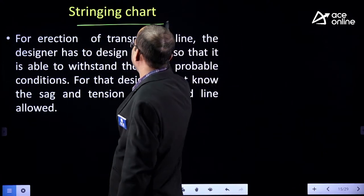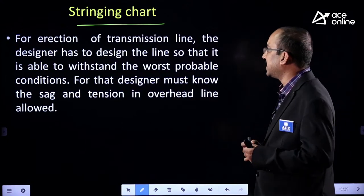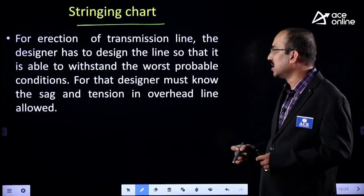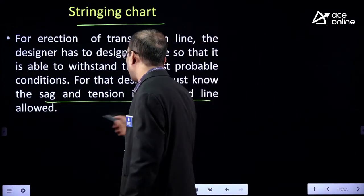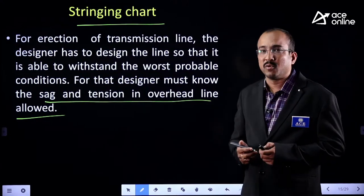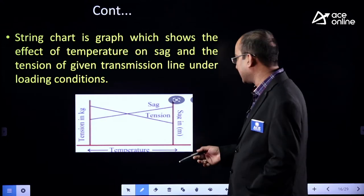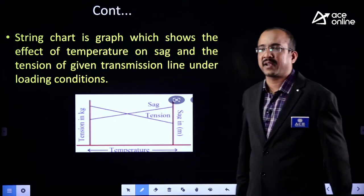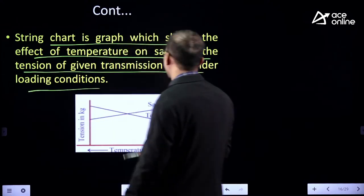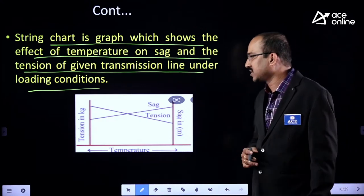What do you mean by a stringing chart? For erection of a transmission line, the designer must know the SAG and tension that can be allowed in an overhead transmission line. A stringing chart is a graph which shows the effect of temperature on SAG and tension of a given transmission line under loading conditions.